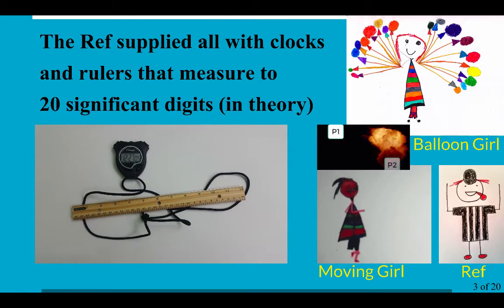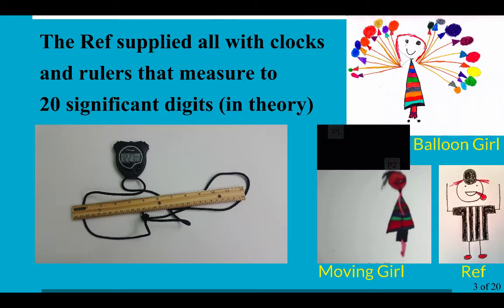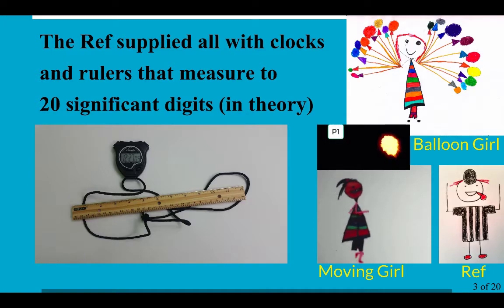They are doing so with rulers and clocks that measure things to 20 significant digits. Well, at least in theory, because of course they mean much more complicated devices. But we're doing this in theory.